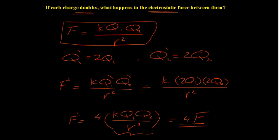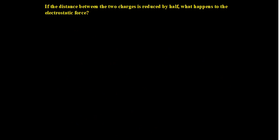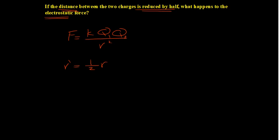The last example: if the distance between the two charges is reduced by half, what happens to the electrostatic force? We're still following Coulomb's law. This is different from the previous example — we're not touching the charges but we are changing the distance, reducing it to half. So the new r is r/2.